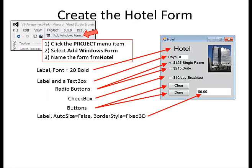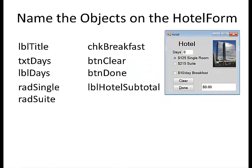Let's create the hotel form. Click the Project menu item, select Add Windows Form, and name the form FRM_HOTEL. Add a label, a label and text box for days, radio buttons for room selection, a check box for breakfast, buttons for clear and done, and a label with auto size set to false and border style Fixed 3D. Name the objects: LBL_Title, TXT_Days, LBL_Days, RAD_Single and RAD_Suite for the radio buttons, CHK_Breakfast for the breakfast checkbox, BTN_Clear and BTN_Done for the buttons, and LBL_HotelSubtotal.